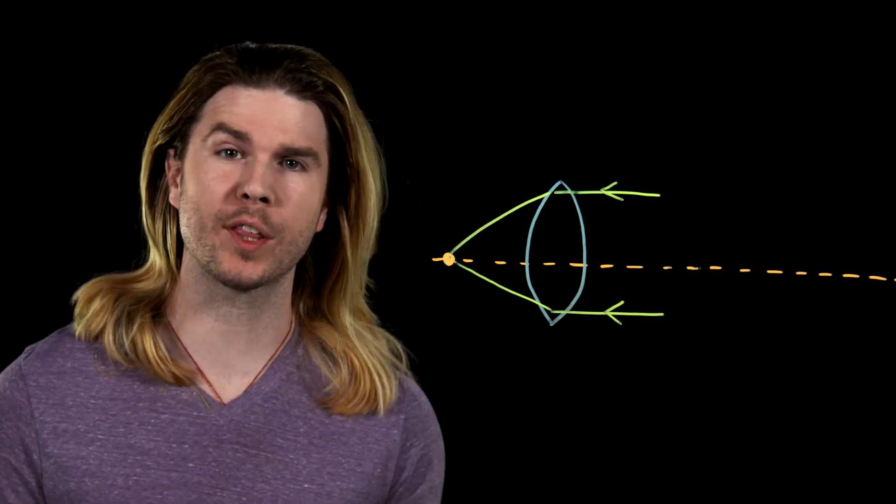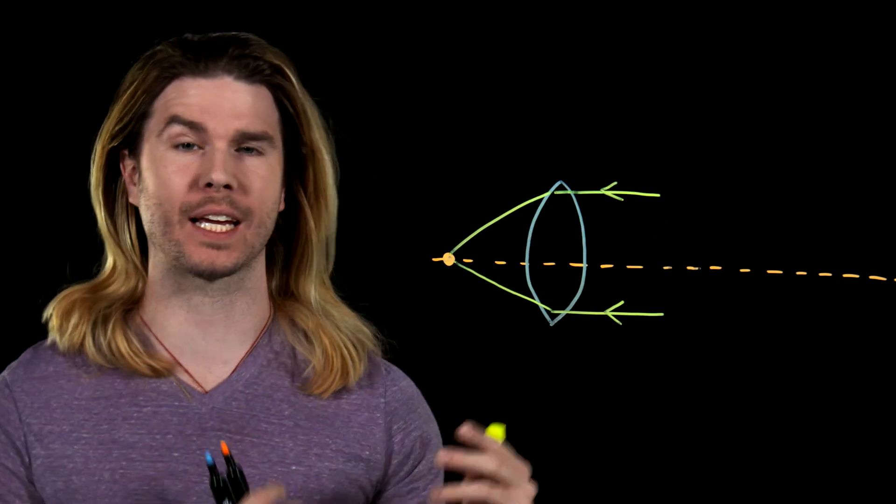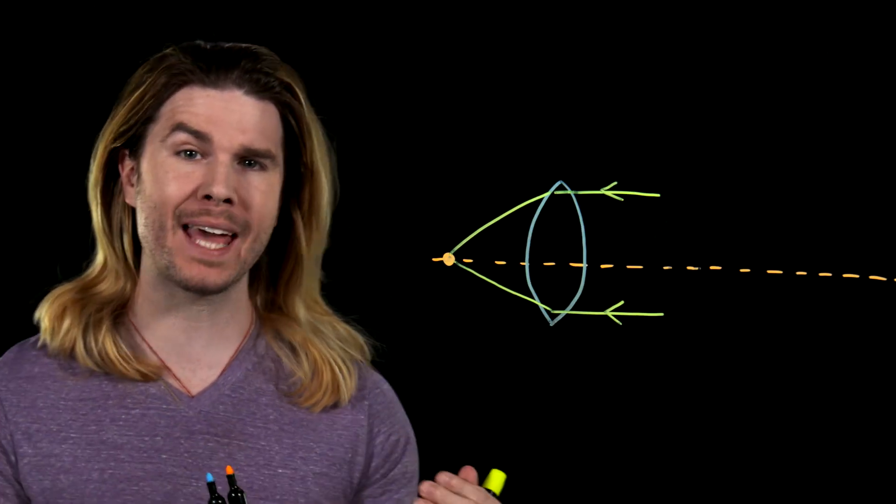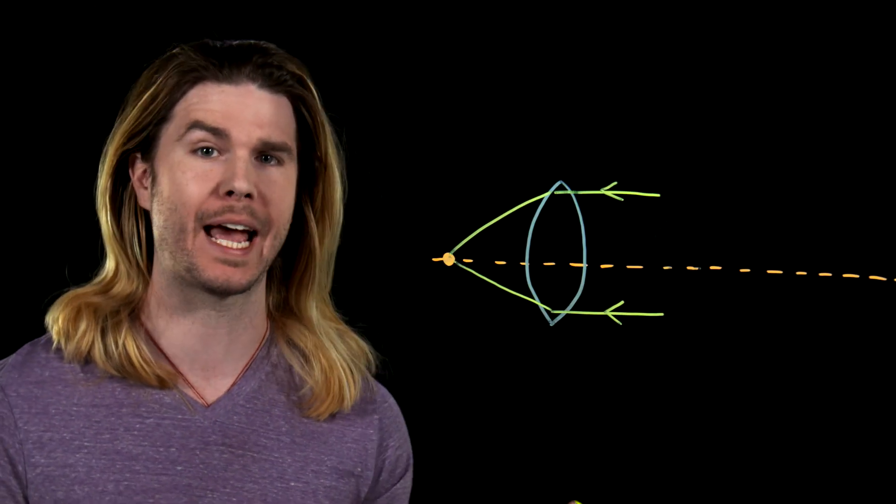First of all, how do magnifying glasses magnify stuff? The magnifying glasses that you are most familiar with are just convex lenses, lenses with this shape on a stick. And what those lenses do is bend or refract light as the light passes through it and the light interacts with the glass.